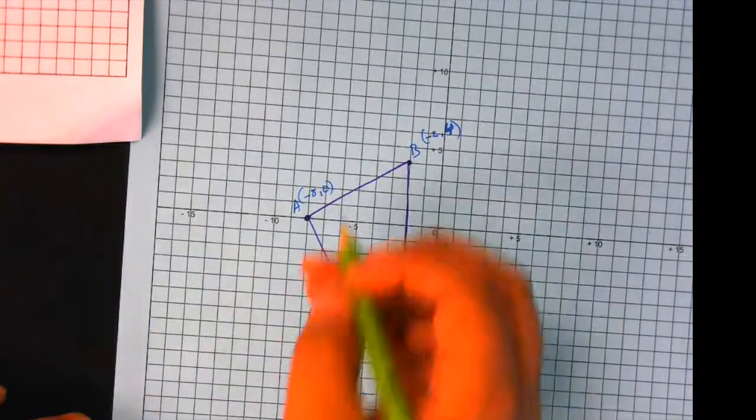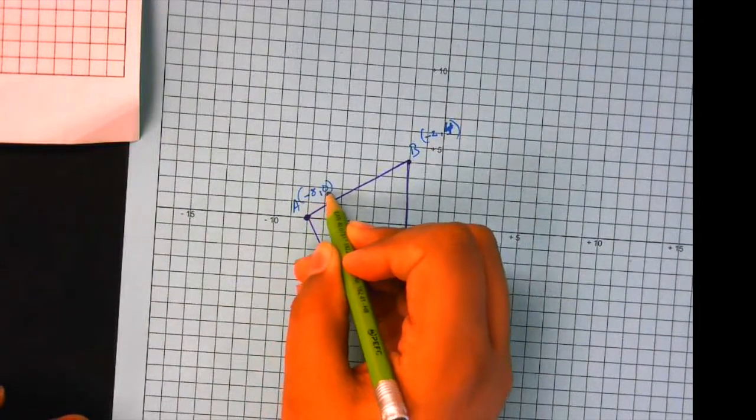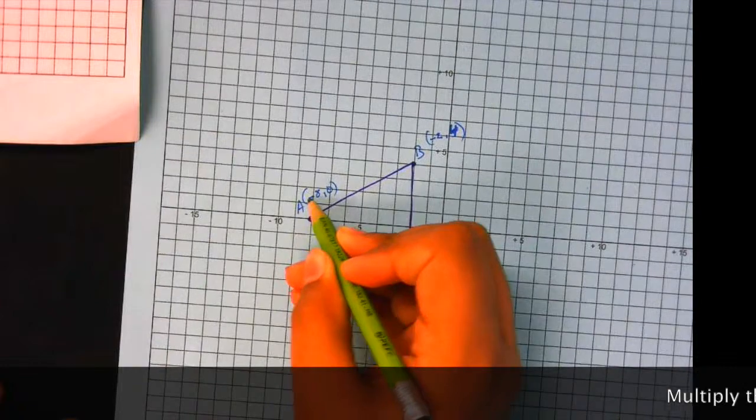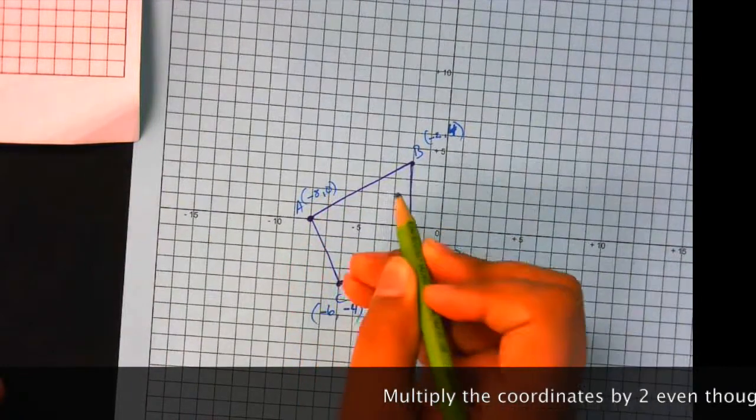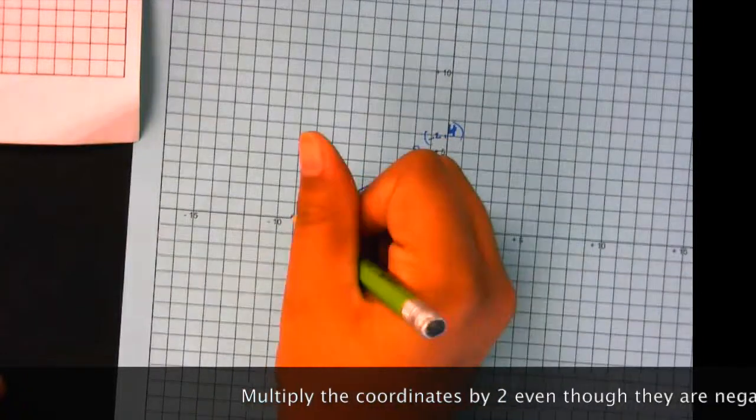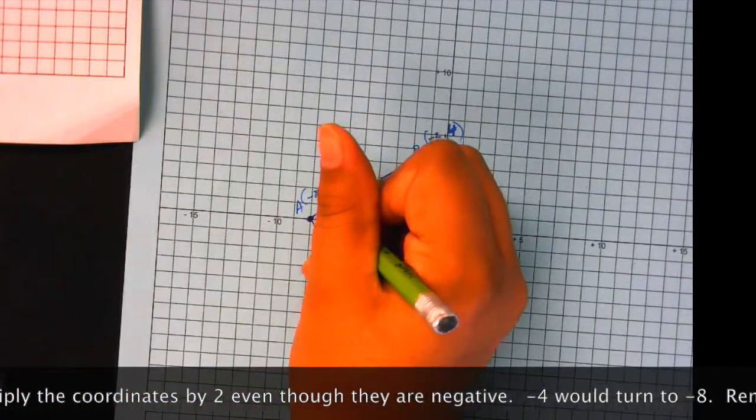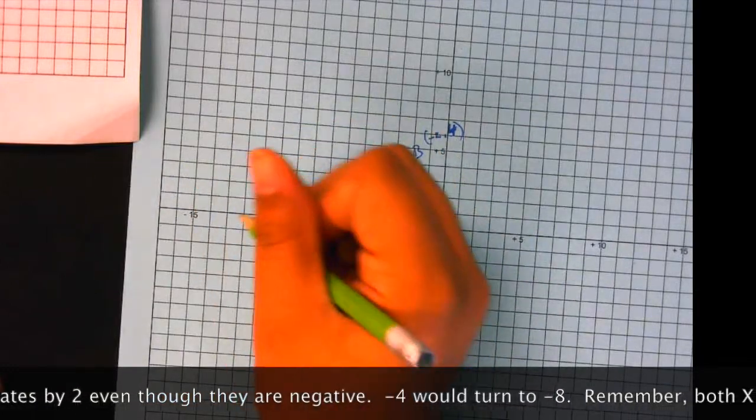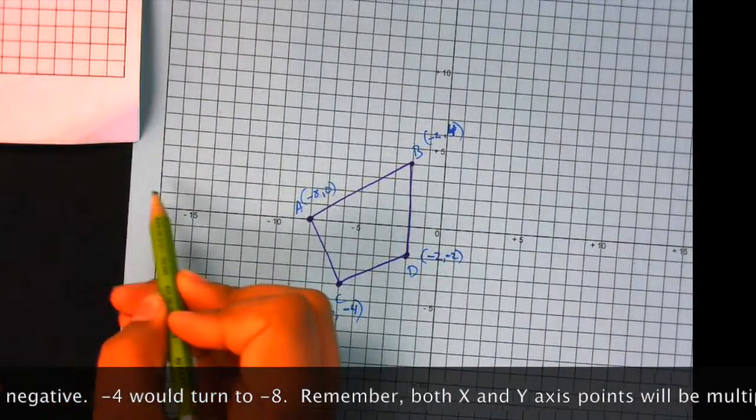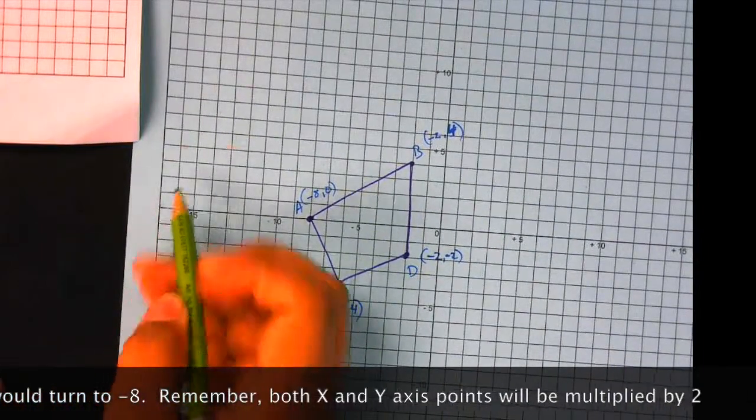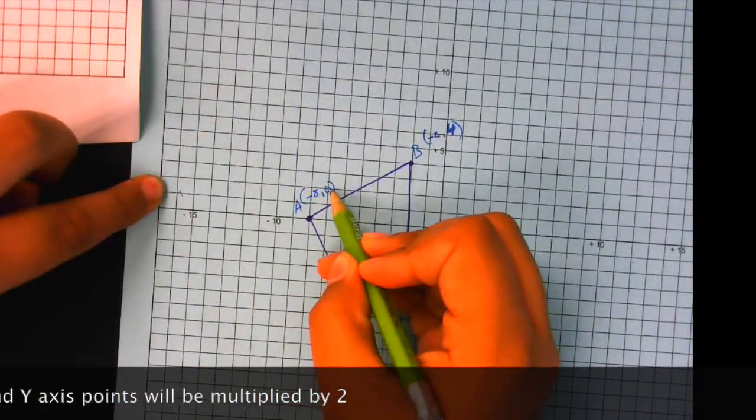So what you do, we can start with A. The coordinates are negative eight and zero. So what you want to do, you want to multiply both of these coordinates by two because the factor is two. If you multiply negative eight by two, what you would get is negative 16. So then we find negative 16, which would be right over here.